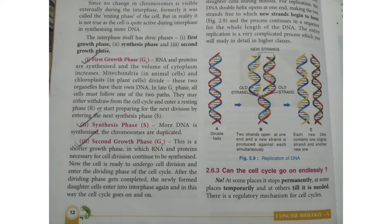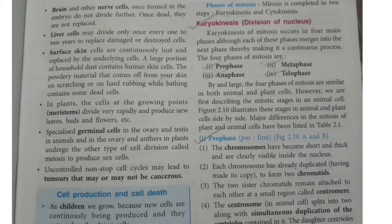Can the cell cycle go on endlessly? No. At some places it stops permanently, at some places temporarily, and at others until it is needed. There is a regulatory mechanism for cell cycles. The brain and other nerve cells, once formed in the embryo, do not divide further — once dead, they are not replaced. Liver cells may divide only once every one to two years to replace damaged or destroyed cells. Surface skin cells are continuously lost and replaced by the underlying cells.